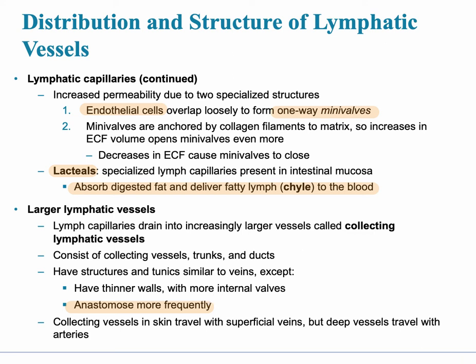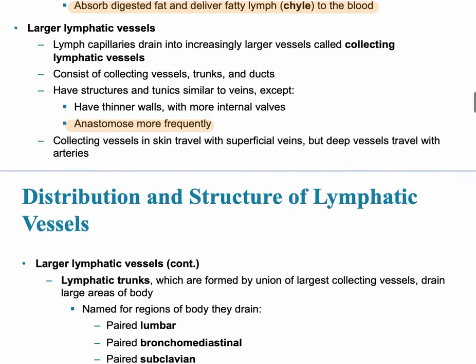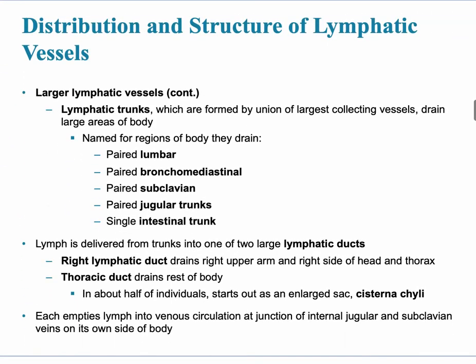Those vessels progressively become larger, and specific names are given for the regions of the body where they are found. The vessels lead into trunks — the larger lymphatic vessels — which form by collecting vessels draining large areas of the body.